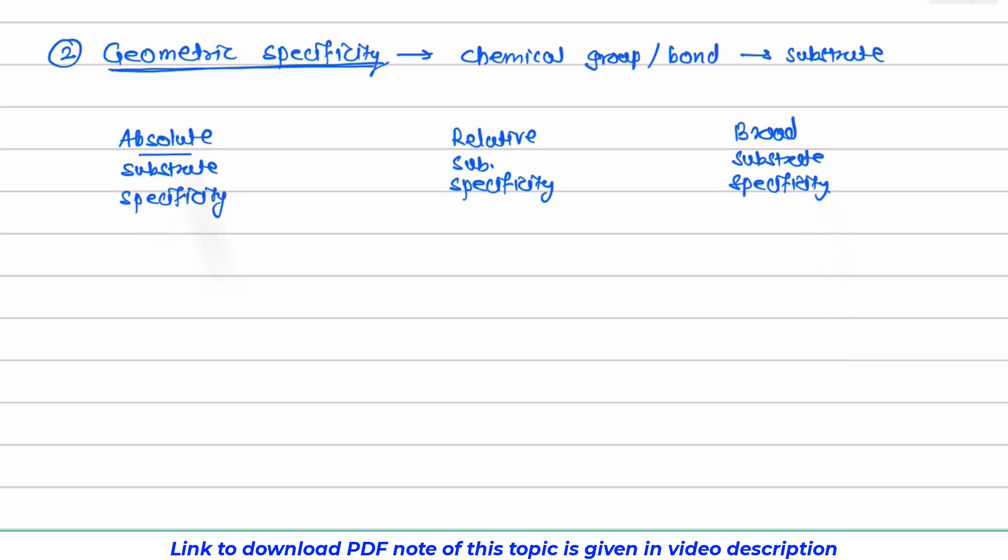Now first, let us look at the absolute substrate specificity. Here this is very narrow range of specificity. Here only one substrate is there for the enzyme. And again, here also example is glucokinase. As we know, glucokinase has only one substrate and that is D-glucose.